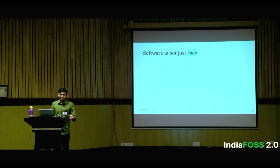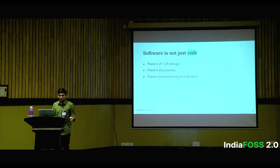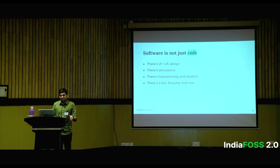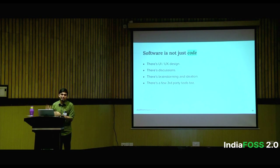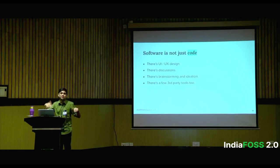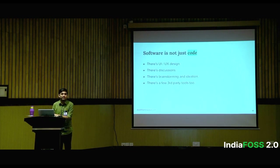The fifth learning: it's hard to make everything open. Software is not just code — there's UI and UX design, discussions around how you want to do something, brainstorming and ideation, and third-party tools too. As a sole maintainer, I have an idea for Blaze in my head and I also have the UI in my head, but I don't want to spend time designing the UI on Figma and putting it on the open source project for someone else to contribute, because I can directly write the code and get it out there.